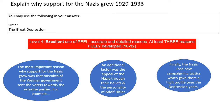You could then continue with your second paragraph: 'An additional factor was the appeal of the Nazis through their beliefs and the personality of Hitler,' and then provide evidence and explanation to back that up and link it back to the question. Finally, you could explore the campaigning tactics which gave the Nazis a high profile over the depression years and allowed them to develop support, again providing evidence and explanation for that.